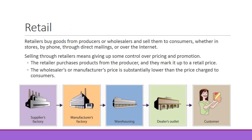Retailers buy goods from producers or wholesalers and sell them to consumers, whether in stores, by phone, through direct mail, or over the internet. Selling through retailers means giving up some control over pricing and promotion. The retailer purchases products from the producer and marks them up; the wholesaler or manufacturer's price is substantially lower than the retail price. The item starts at the supplier's factory, goes to the manufacturer, is warehoused, transported to a dealer's outlet, and eventually a customer buys it. Retail is probably the most common way people buy things.